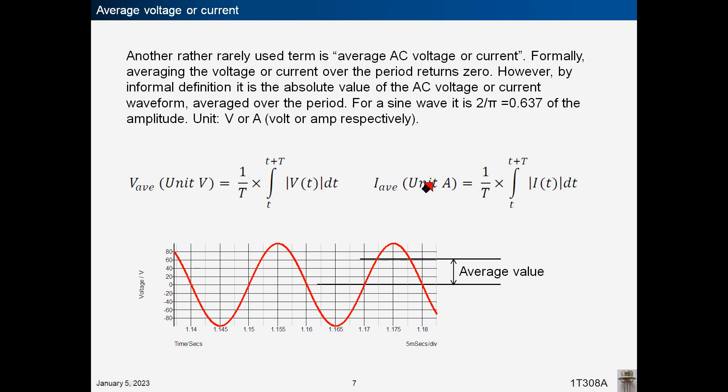Another rather rarely used term is average AC voltage or current. Formally speaking, averaging the voltage or current over the period returns zero. However, by informal definition, it is the absolute value of the AC voltage or current waveform averaged over the period. For a sine wave, it is 2 over pi of the amplitude. The units are volts or amperes respectively.